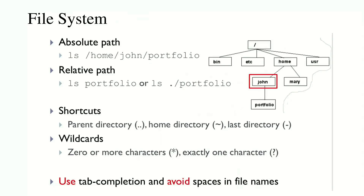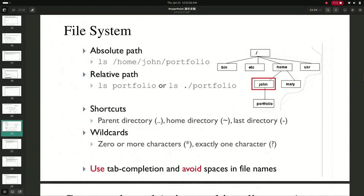You can provide the absolute path or check for the relative path. There are also shortcuts: use double dot (..) to go to the parent directory, tilde (~) to go to the home directory, and dash (-) to go to the last directory. There are also wildcards: asterisk (*) for zero or more characters and question mark (?) for exactly one character. Use tab completion and avoid spaces in file names - a file with spaces will not open properly.